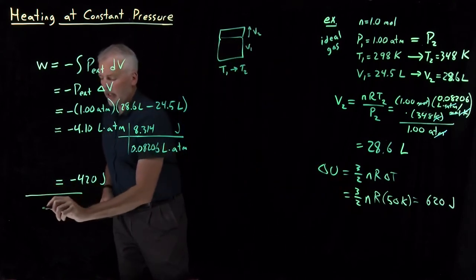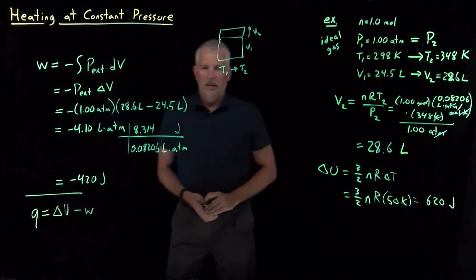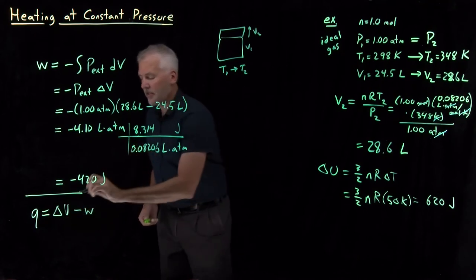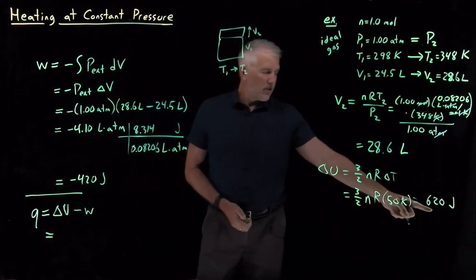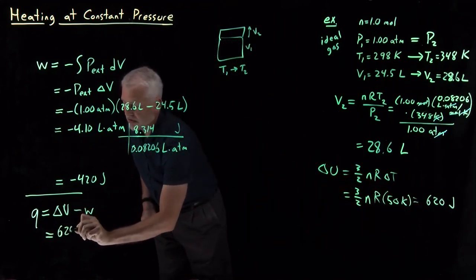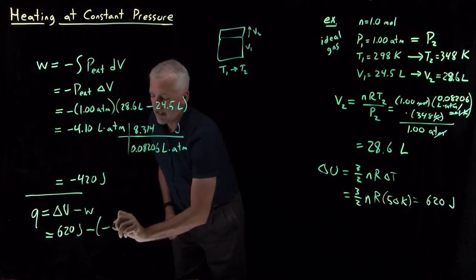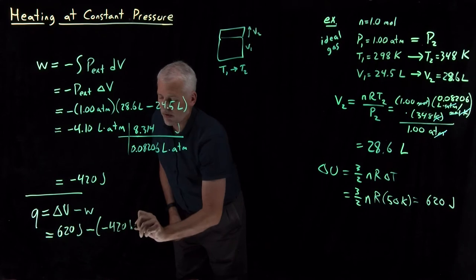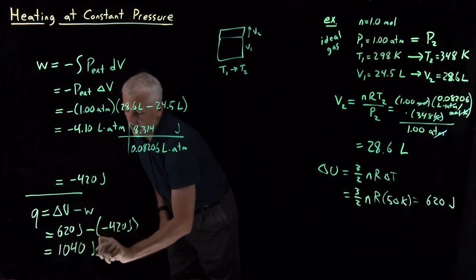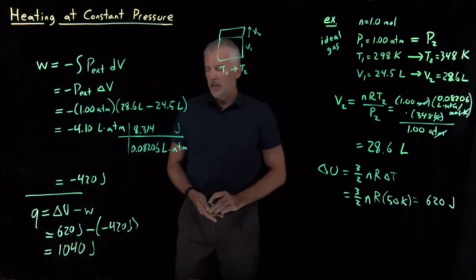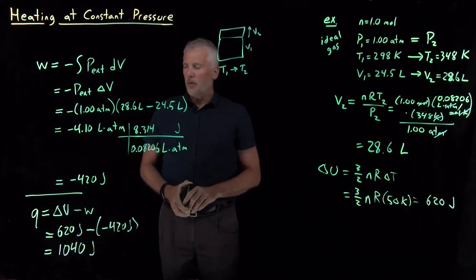That now allows us to calculate the heat. First law tells us the heat is ΔU minus the PV work. We've calculated both of those. The change in the internal energy is 620 joules, the work is negative 420 joules, so I'm subtracting negative 420 joules. The net result is over a kilojoule, 1,040 joules in this case.